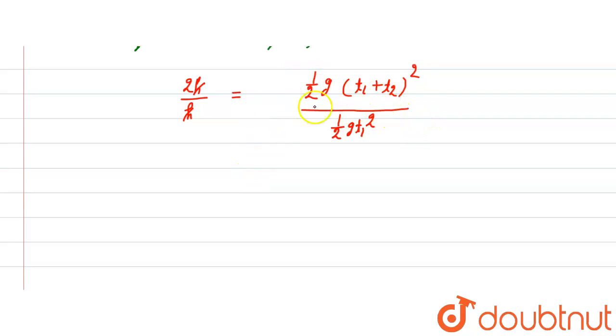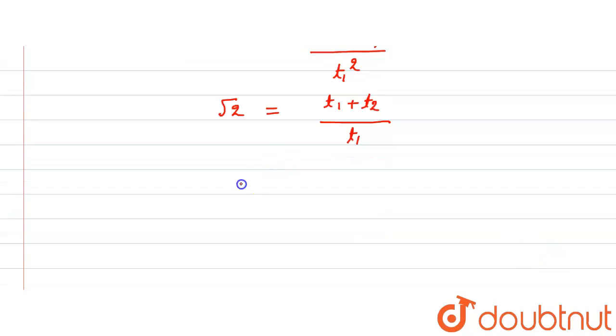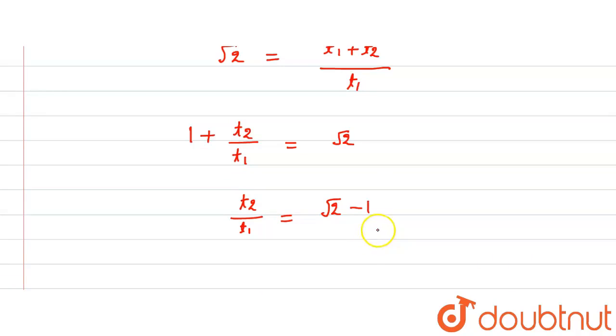So here this will come 2 is equal to (t1 plus t2) square upon t1 square. Now take the square root, so here it is under root of 2 is equal to (t1 plus t2) upon t1. Now here ratio will come t2 upon t1 is equal to under root of 2 minus 1.